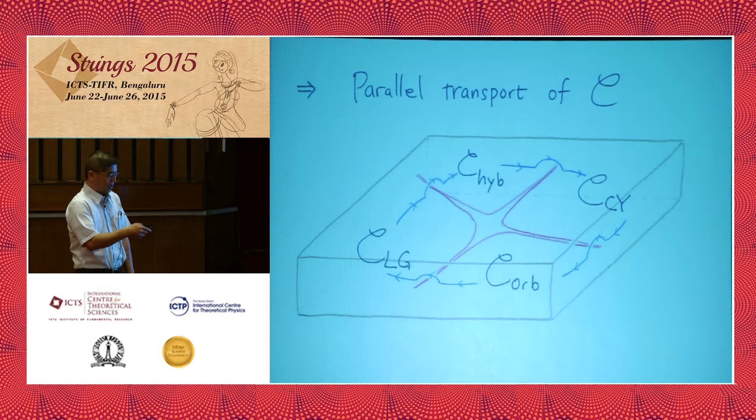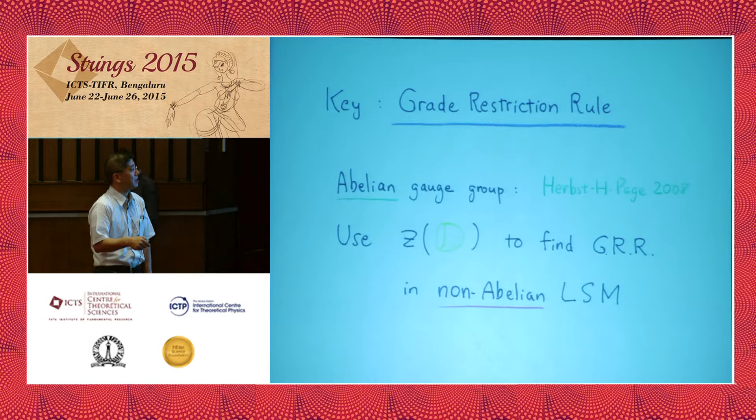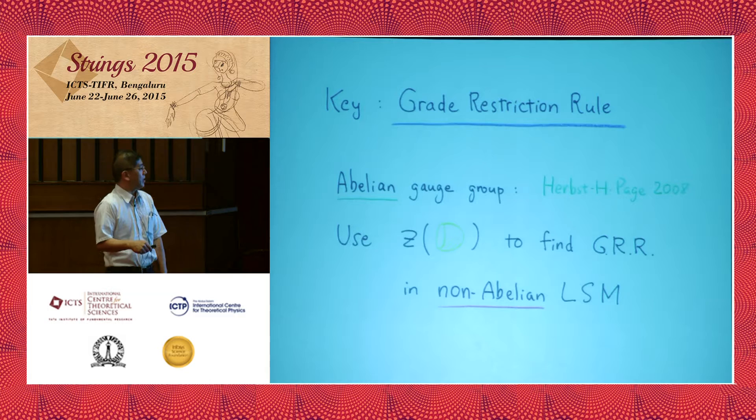Describing this parallel transport using the linear sigma model is one goal of this talk. The grade restriction rule, which is in the title, plays a key role in this parallel transport. This was first found in abelian gauge theories by Herbst and Page. By using the hemisphere partition function, which I have computed more recently, we would like to extend this rule to models with non-abelian gauge groups.